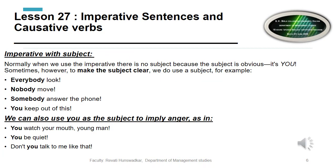Regarding the subject in imperatives: normally when we use the imperative there is no subject because the subject is obviously 'you.' Sometimes, however, to make the subject clear we do use a subject. For example: 'Everybody look' — you are saying something to everyone. 'Nobody move' — for example, there is a robbery in the shop.